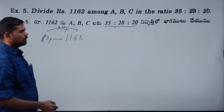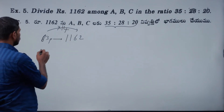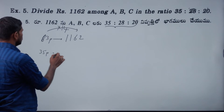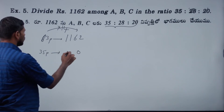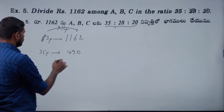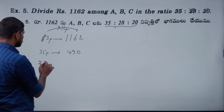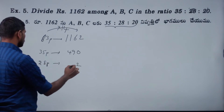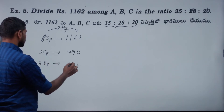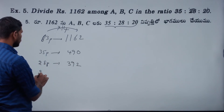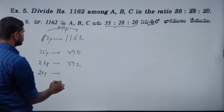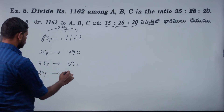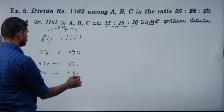35 parts: 35 into 14 is 490. Next: 28 parts — 14 eights gives 392. Next: 20 parts — 20 into 14 is 280 rupees.